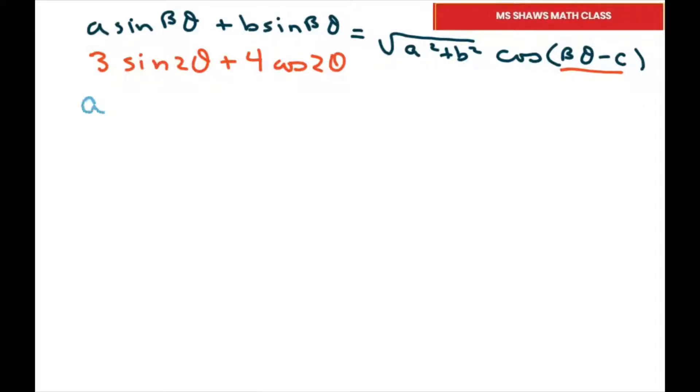We have little a equals 3, little b equals 4, and big B equals 2 right there. Now the only difference is the C. So for this one, our inverse tan is a over b, so we have inverse tan of 3 fourths, which is approximately 0.6435.